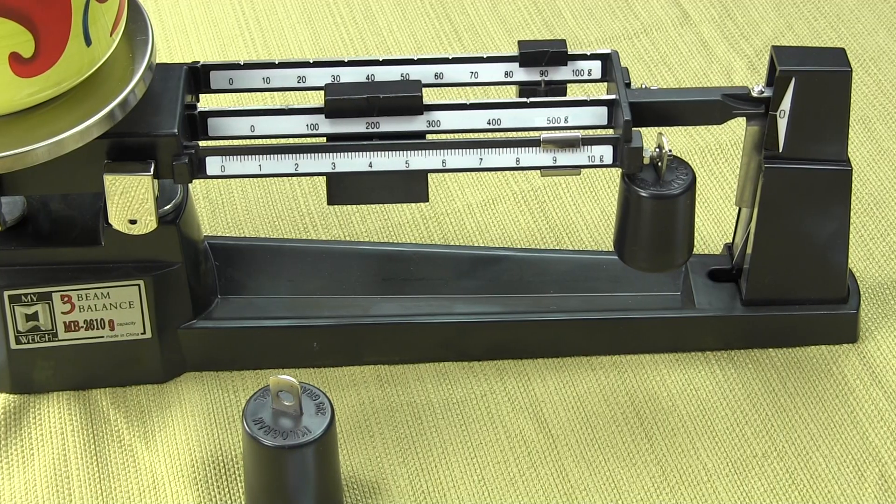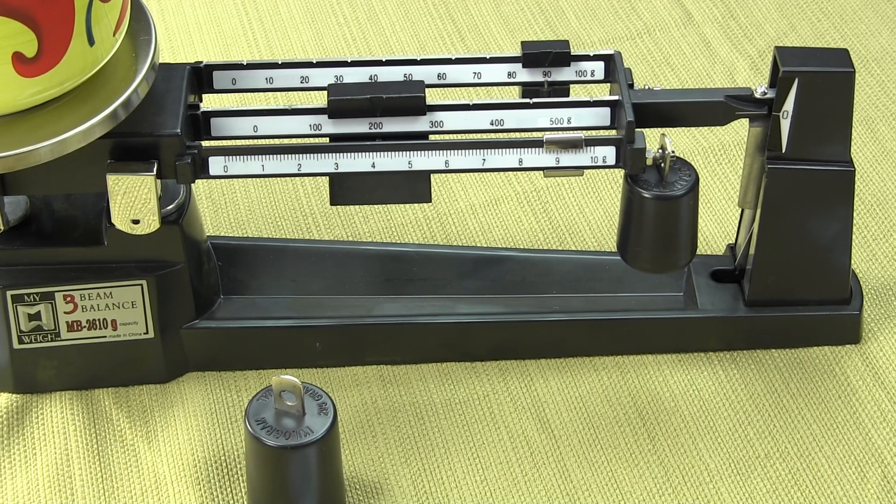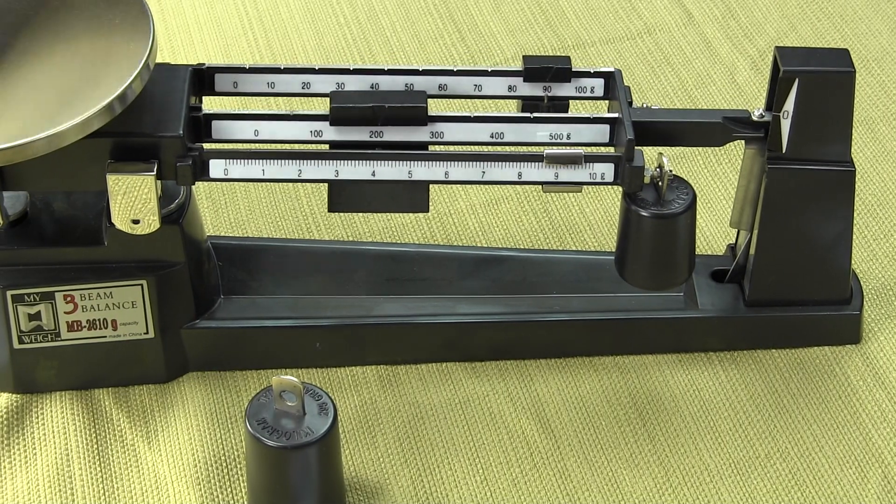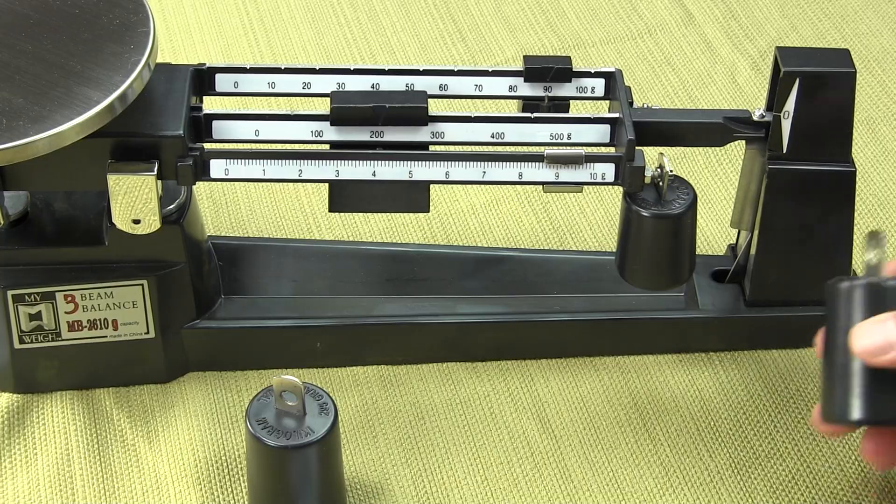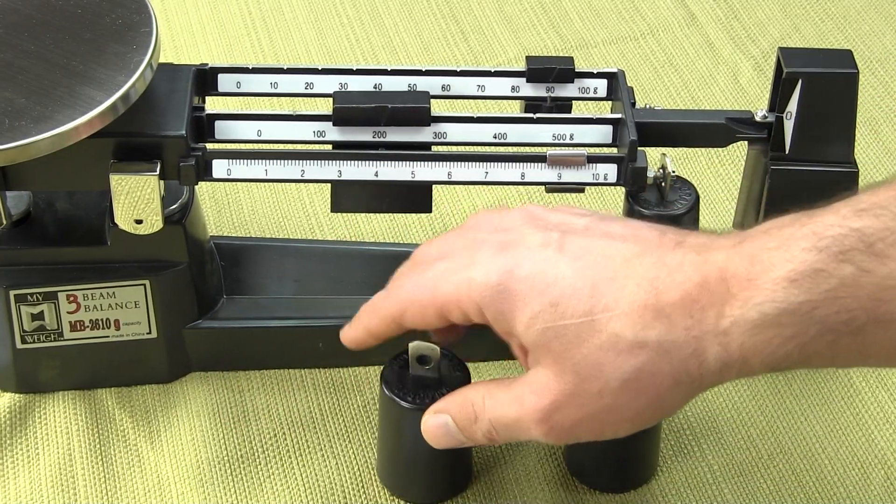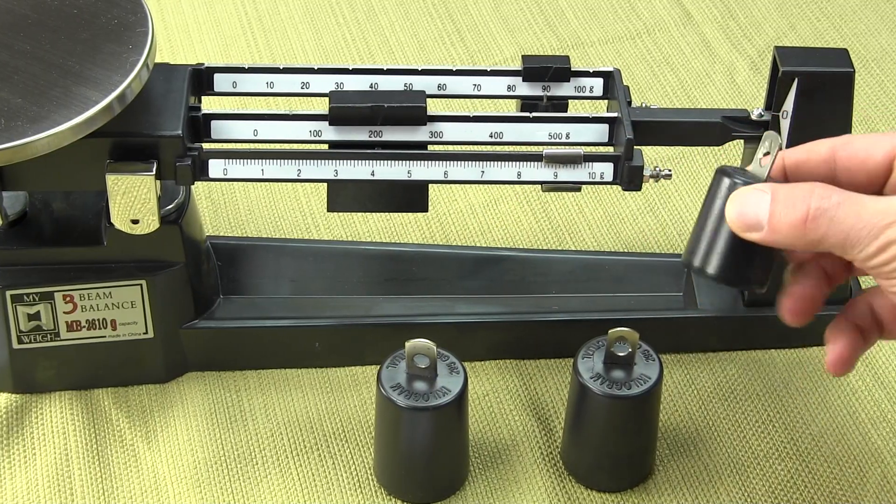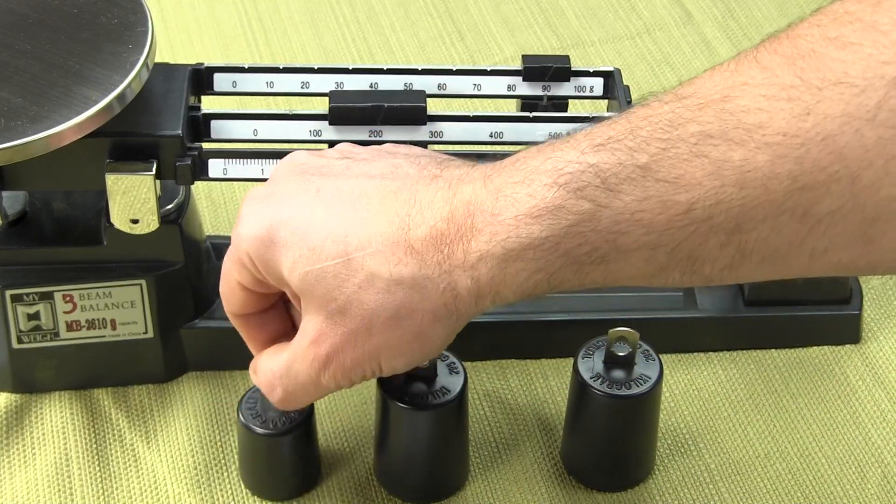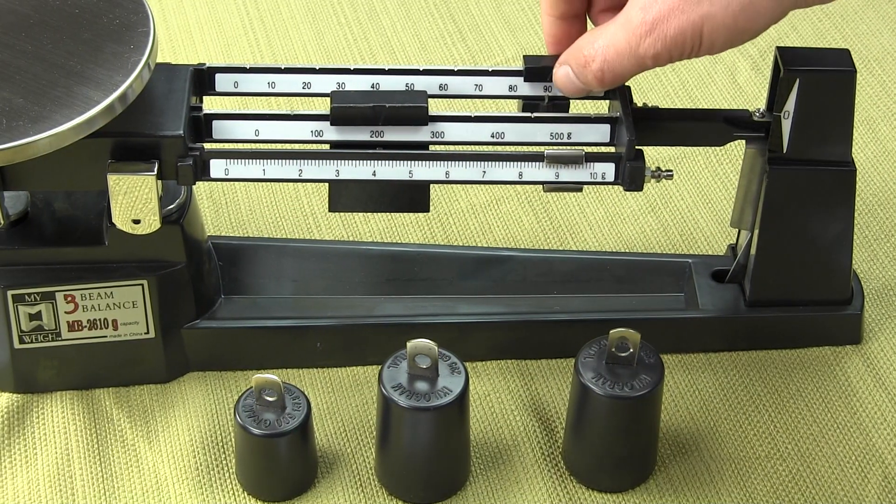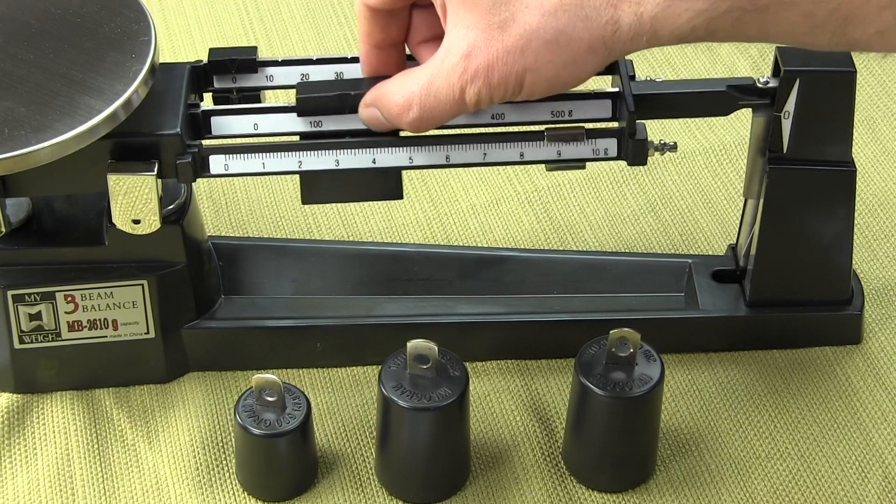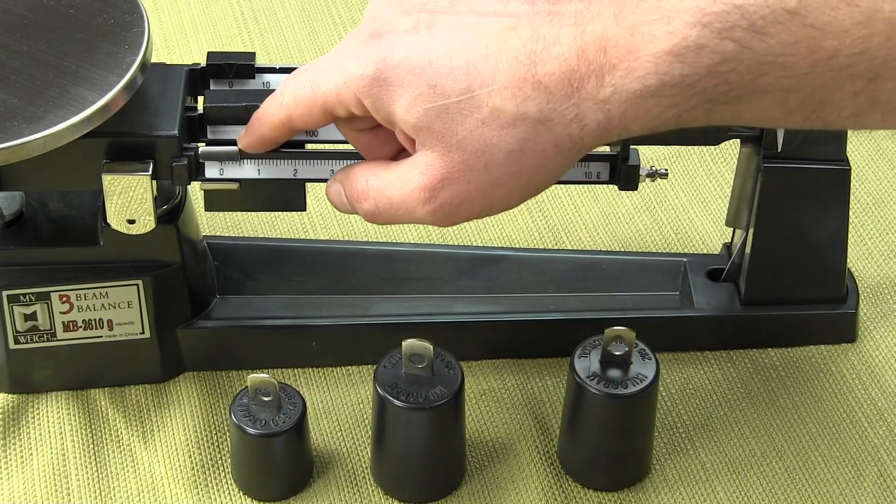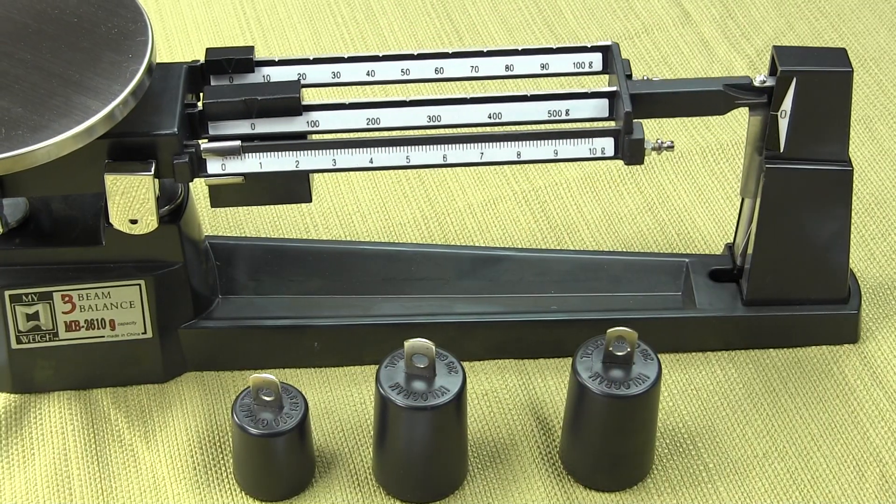When you're shopping for a three beam balance, you really want to see does the manufacturer give you the attachment weights, because these can be pricey. Some manufacturers charge $50 to $60 to $70 for attachment weights. With MyWay, they come with the three beam balance, so there's no optional accessories. Very simple operation. We see this three beam basically in the educational market to give students the idea of what is mass.